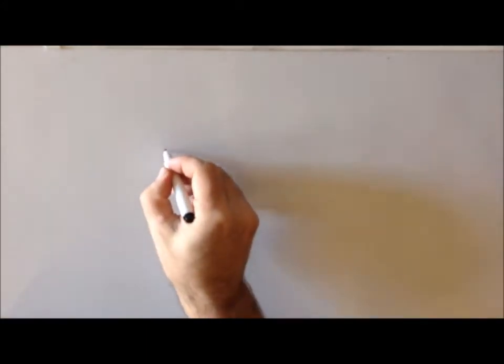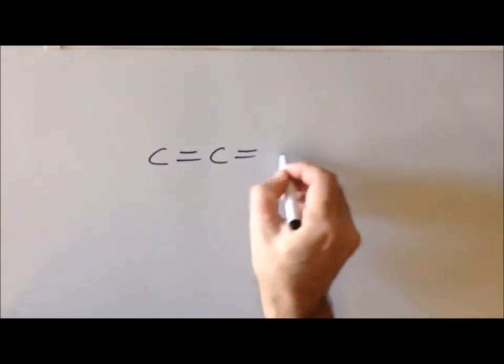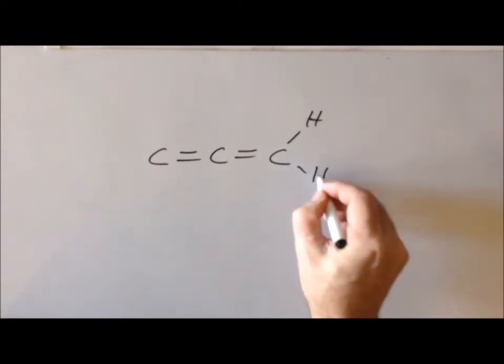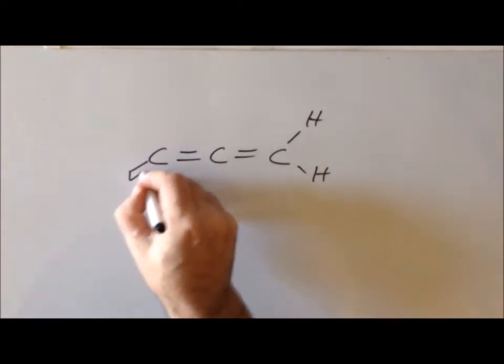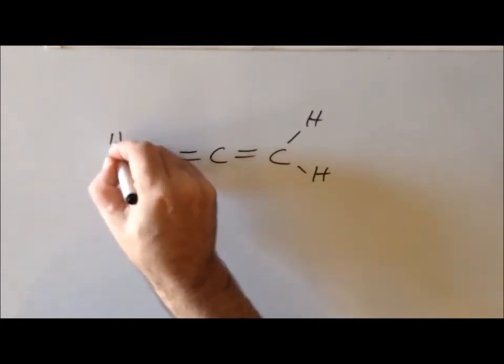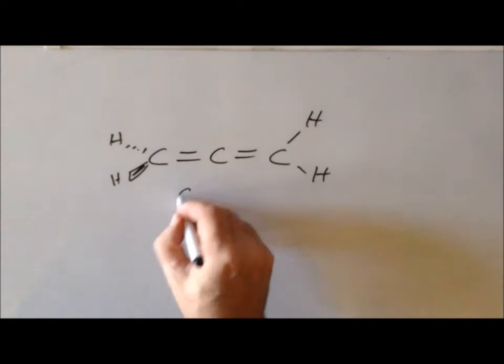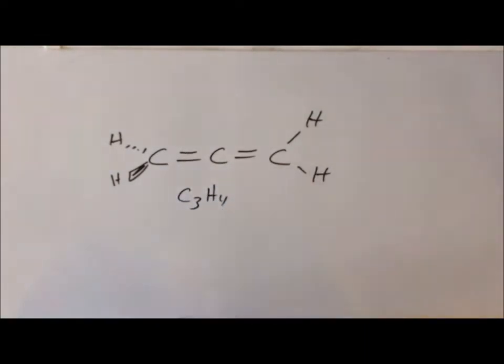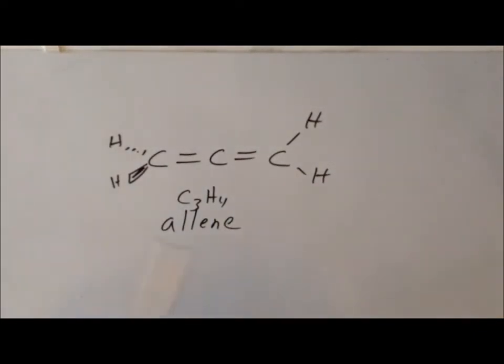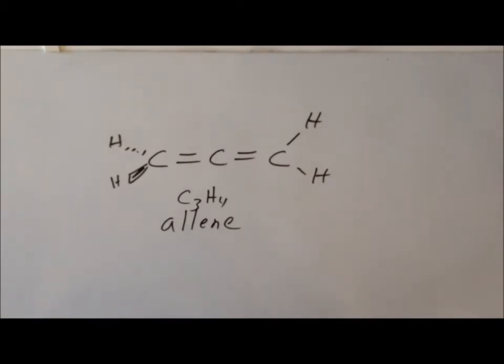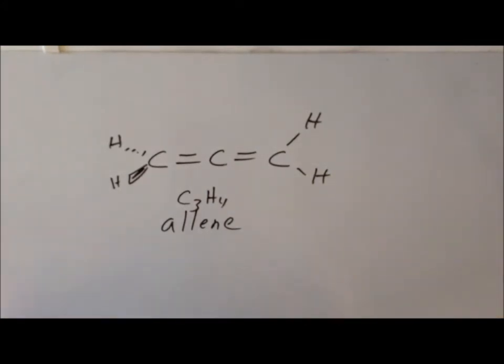Another interesting molecule that falls into an interesting point group family is allene, with the formula C3H4. Allene is interesting because we have cumulative double bonds on each carbon — two double bonds in a row, which we're not used to seeing. We're used to seeing conjugated double bonds: double bond, single bond, double bond, single bond.